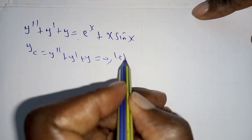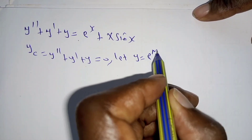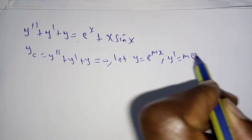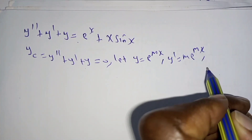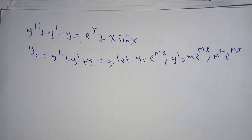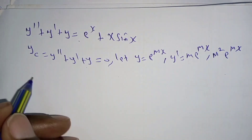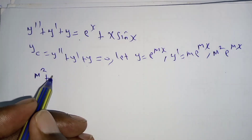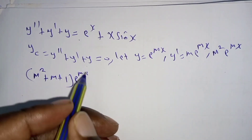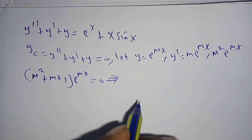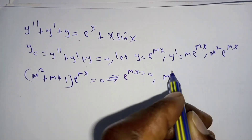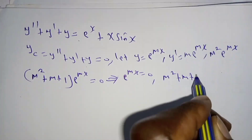We solve this by letting Y equal to e^(mx), so that Y single prime is m·e^(mx). We differentiate it twice to get m² e^(mx). Then we substitute so that we get m² plus m plus 1, factoring out e^(mx) and setting it equal to 0.